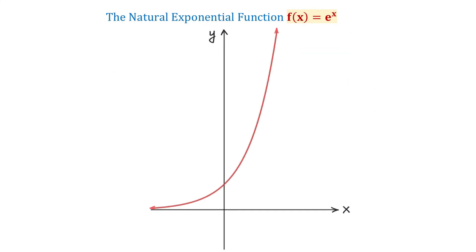Number e is also called the natural base, and this number is the base for the natural exponential function f of x equals e to the x power.